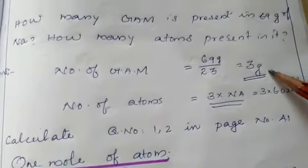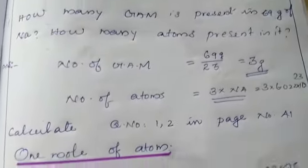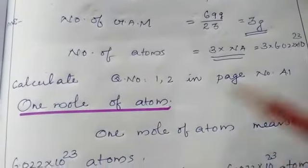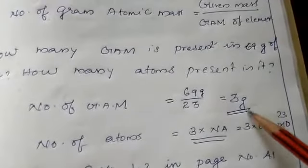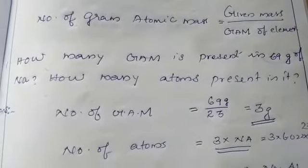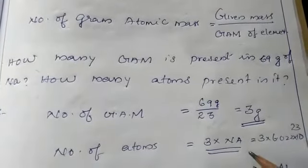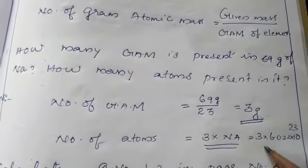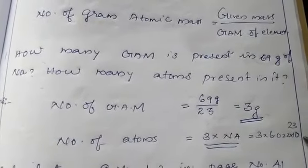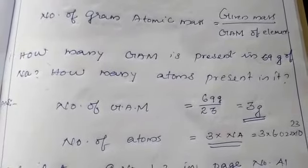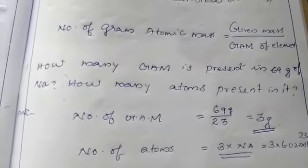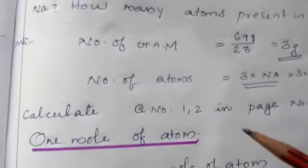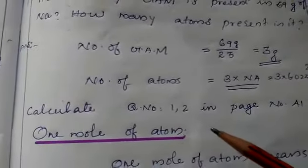The number of atoms = number of GAM × Nₐ = 3 × Nₐ. Nₐ is 6.022 × 10²³. So the number of atoms is 3 × 6.022 × 10²³. Some problems are given on the same page.